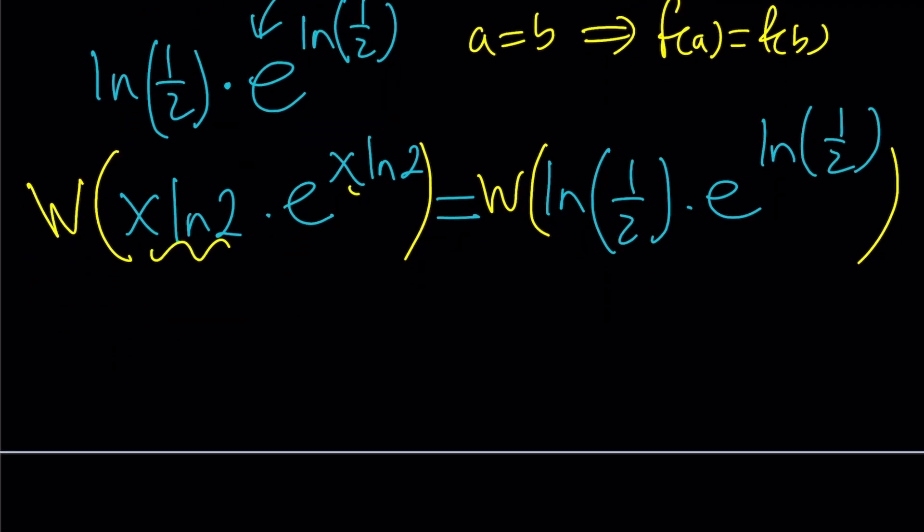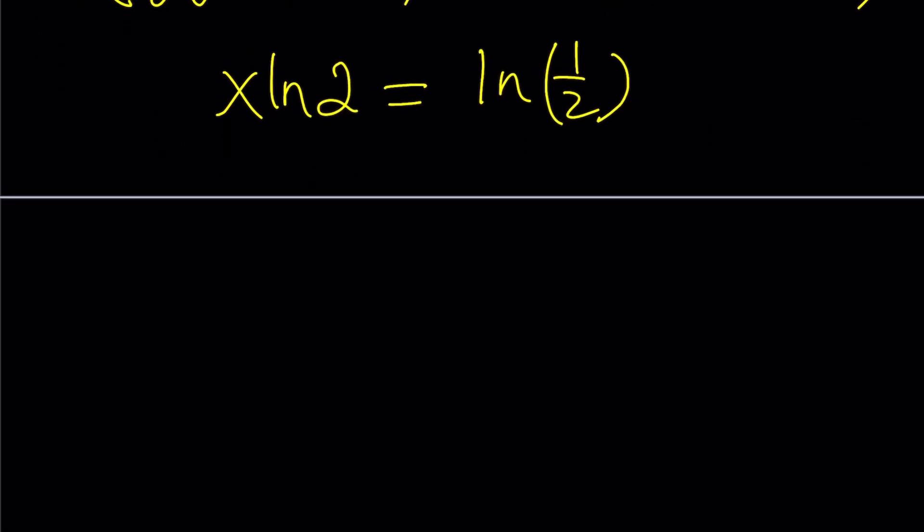Notice that this is our t, and when you input t e to the t, you'll get a t. So this is going to become x ln 2, and this is going to become ln 1 half. Awesome. All you have to do is divide by ln 2 and you'll get the answer.